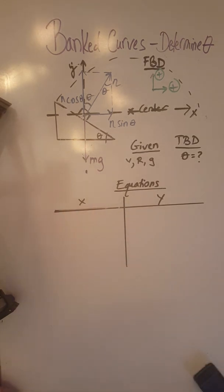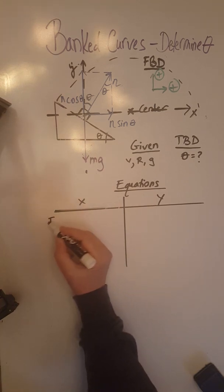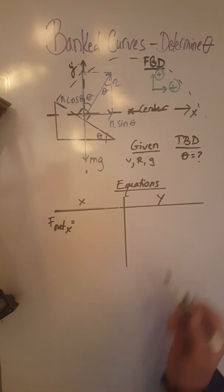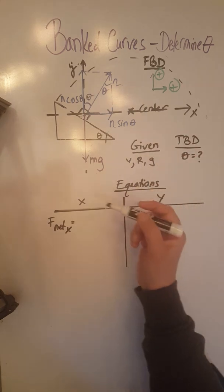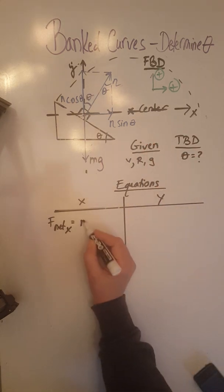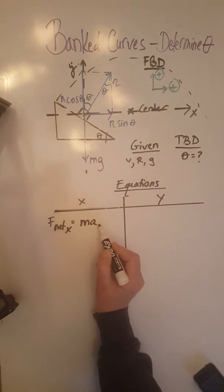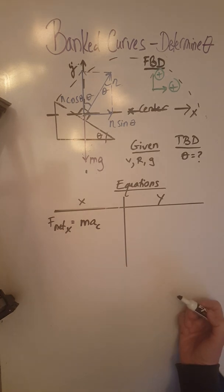So then for the equations we are going to, as always, use Newton's second law of motion, F net equals m times a. We are going to have F net x that is equal to m times a because the only unbalanced force we have is along the x-axis and our a will specifically be our centripetal acceleration, so a_c.